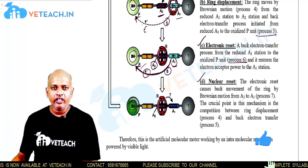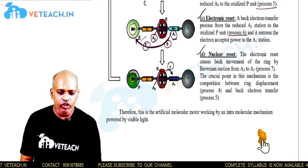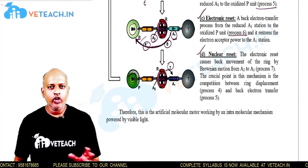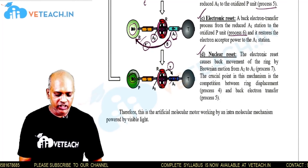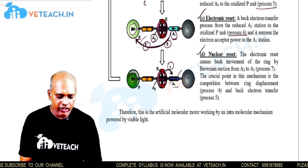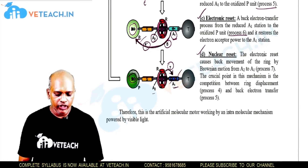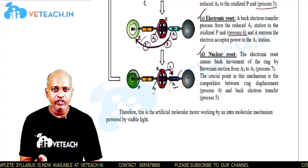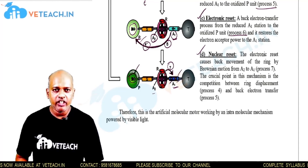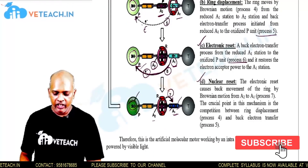The final operation is the nuclear reset, indicated by process 7. After completion of the electronic reset, due to the transfer of the electron from A1 back to P, the two positive charges on A1 are reset. As a result, the ring shuttles in reverse from A2 back to A1. The ring, the positive charges on P, and the charges on A1 are all reset, and the molecule returns to its initial state. This is the nuclear reset process.